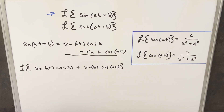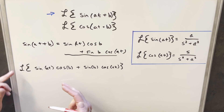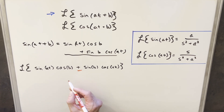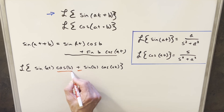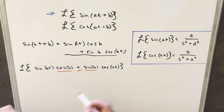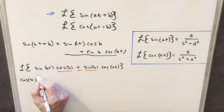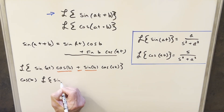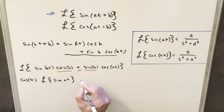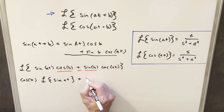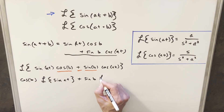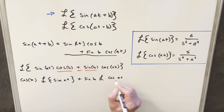Now, as I've mentioned in previous videos, the properties of Laplace transforms are very similar to the properties of integrals because the Laplace transform is an integral. So I can split this Laplace transform on the plus sign, and I can also pull out a constant. Notice cosine of b and sine of b are just constant values, so I can bring those outside the Laplace transform. Pulling out cosine b up front, we get the Laplace of sine at, and pulling out sine b as a constant, we get Laplace of cosine at.